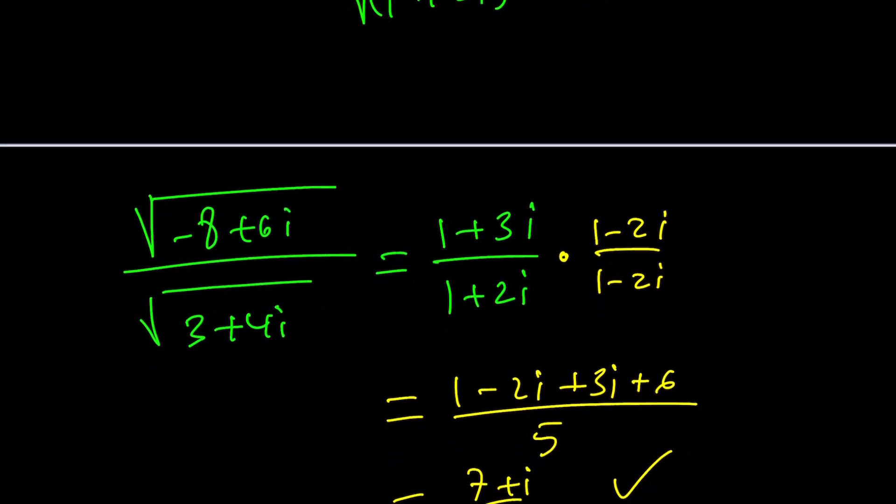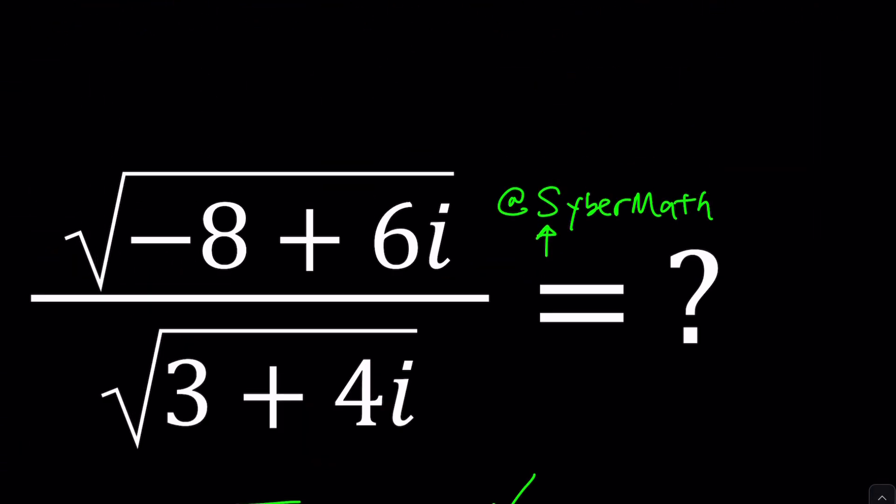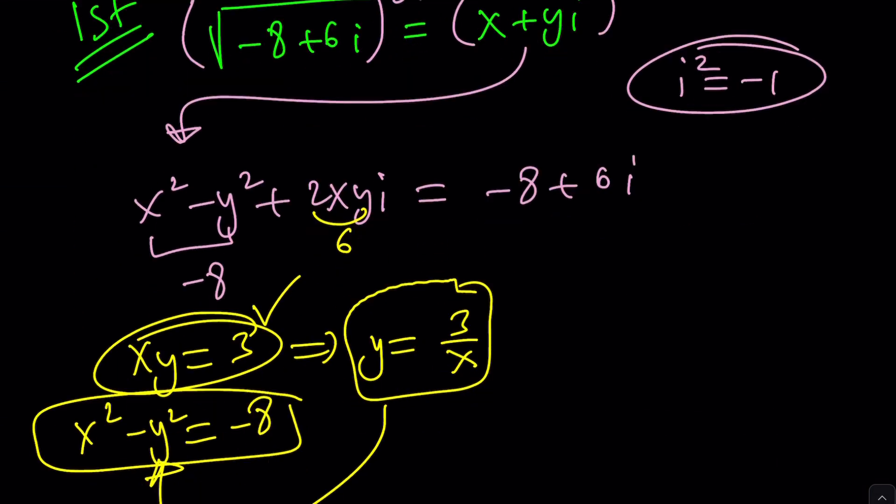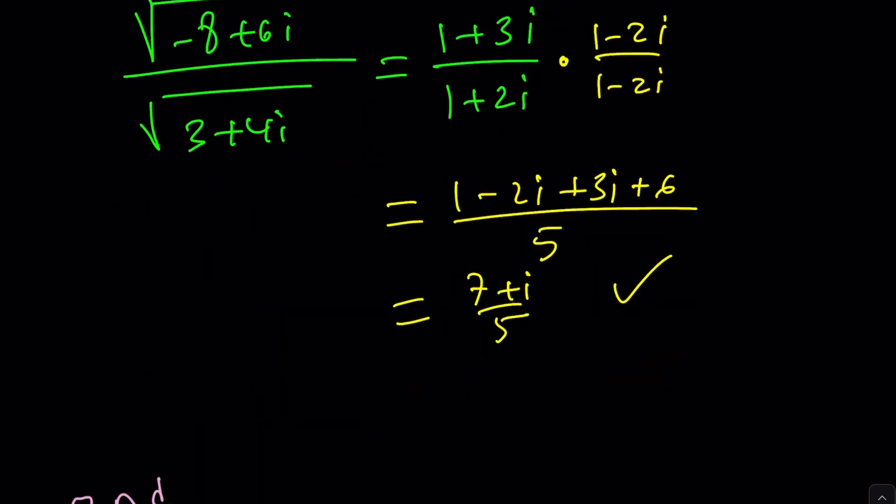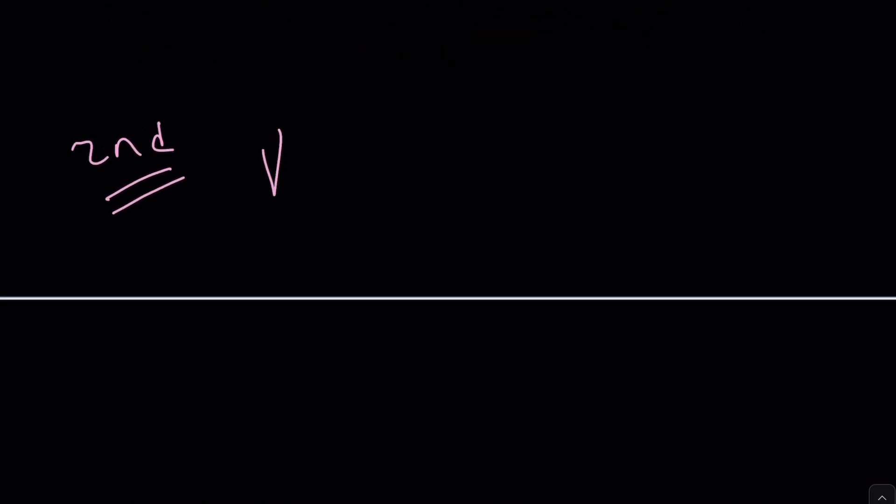Let me go ahead and proceed with my second method because second method is probably going to give us something different. But let me check the original problem one more time. It is supposed to be the square root of negative eight plus six i.